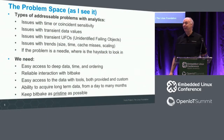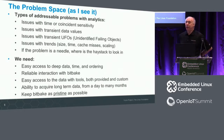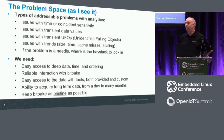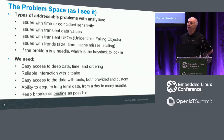The problem space as I see it: issues with time are coincidence sensitivity - that's overlapping builds, the order of things happening, the order of tasks. Transient data values, transient UFOs - we get an error on one build every once a month and just don't know why. Issues with trends: are the size of builds changing, is the time changing, is the cache miss rate changing? And the problem of scaling - one board, many boards, multi-distro. If the problem is a needle, where's your haystack to look for it?